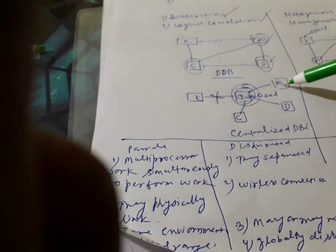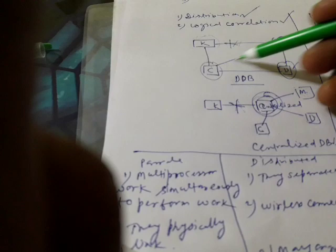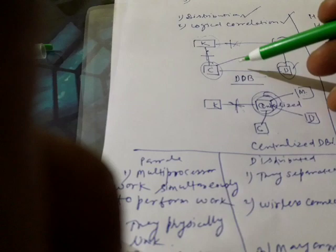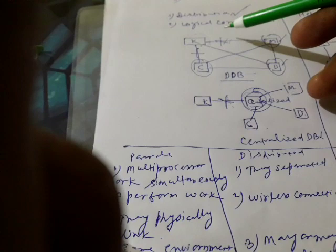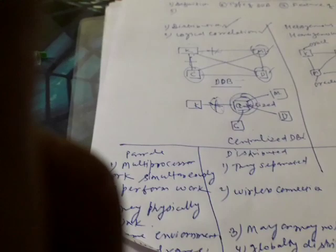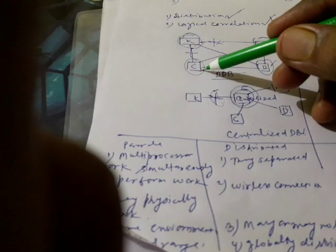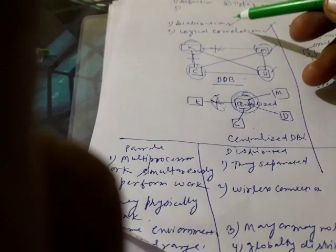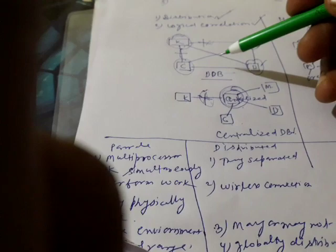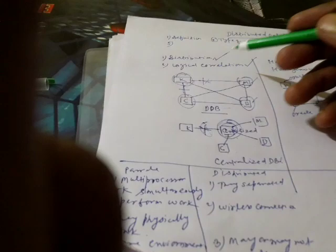Now for the first problem — when the link of Kolkata fails, in a distributed database there are multiple connections, so Kolkata can still communicate via alternate links. The failure chances are reduced. Also, if the Kolkata site goes down, Mumbai, Delhi, and Chennai are still live and can perform their tasks. So using distributed database we can minimize link failure and still perform operations even if one site is down.